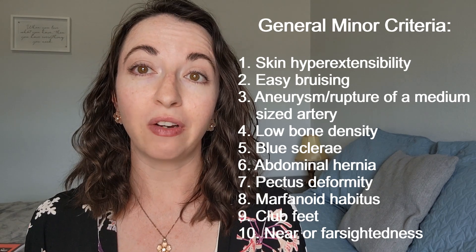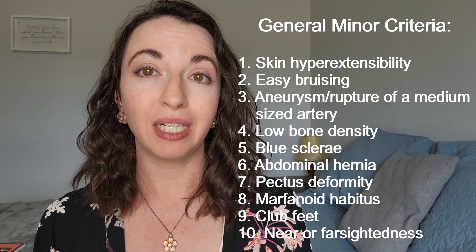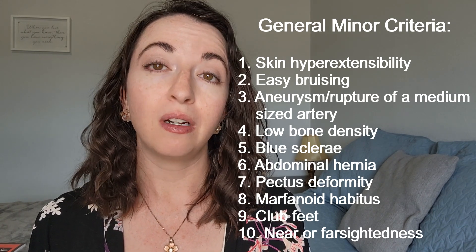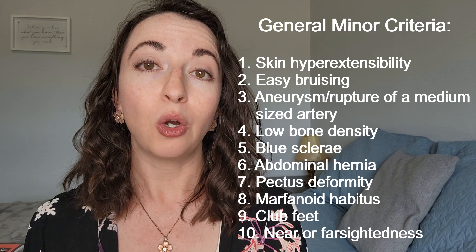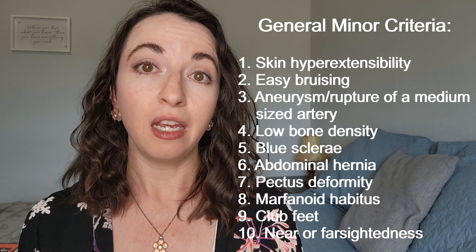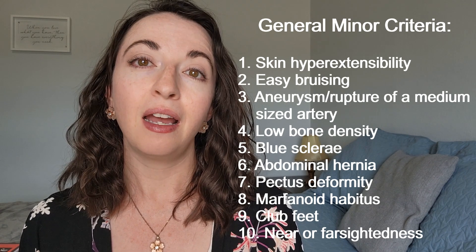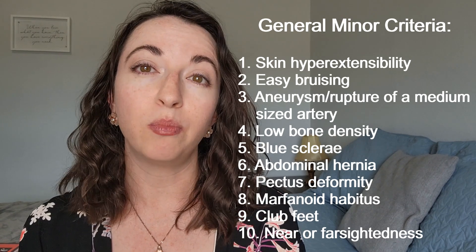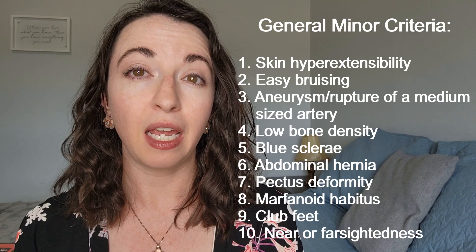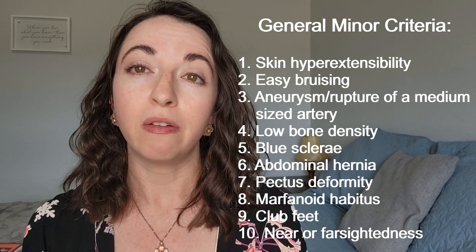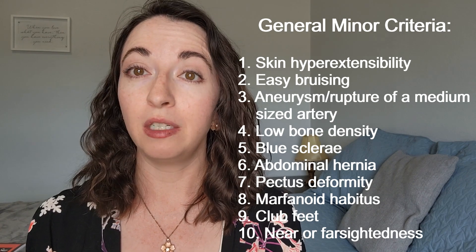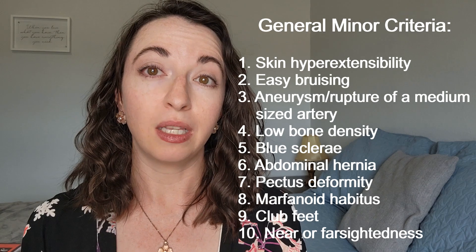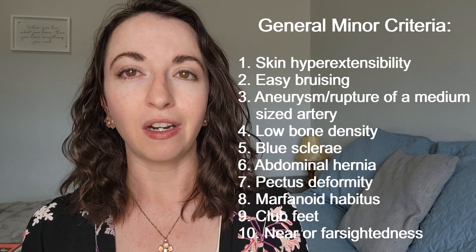The 10 general minor criteria include skin hyperextensibility, meaning stretchy skin; easy bruisability; an aneurysm or rupture of a medium-sized artery; low bone density; blue sclerae, which means a bluish tint to the white parts of the eyes; abdominal hernia; pectus deformity, which is an abnormality of the breastbone and ribs that causes either a concave or convex appearance of the chest; marfanoid habitus, which is a tall thin body type with long arms and long slender fingers and toes; being born with club feet; and being near or farsighted.